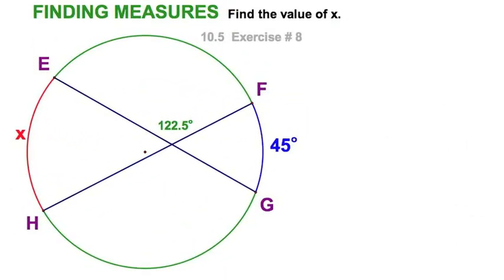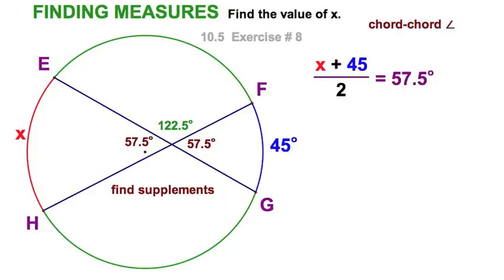Here we have exercise number eight, a chord chord angle. We don't know this arc. We've got red plus blue divide by 2. But we've got the wrong angle here. Let's fix that. We need to take the supplement. Now we know when we set this up, we've got our chord chord, red plus blue divide by 2 equals 57 and a half. We'll just double both sides of the equation. And from here, a little arithmetic. And we're done.